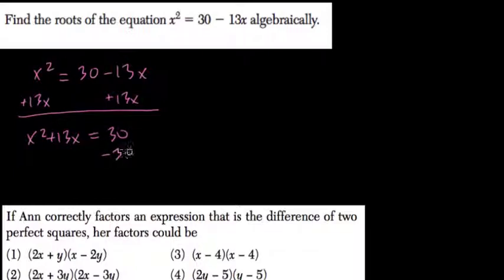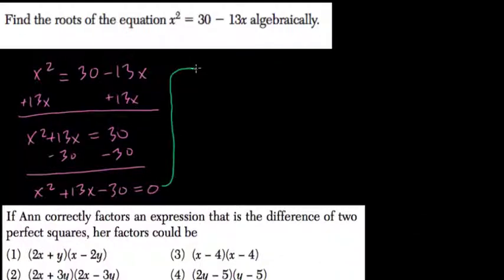Then I subtract 30 from both sides. And now I'm ready to factor x squared plus 13x minus 30 equals 0. When it's equal to 0, you can quickly find the roots. Remember, the roots are when this quadratic equals 0.